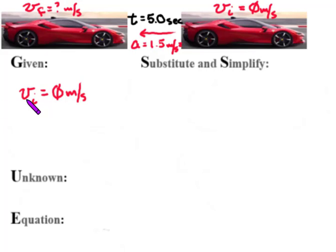Okay, so I have velocity initial is zero meters per second and that's because it's at rest. My acceleration is negative 1.5 meters per second squared and my time is 5.0 seconds.